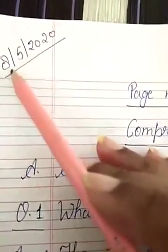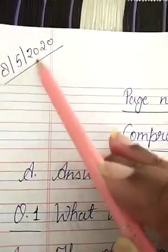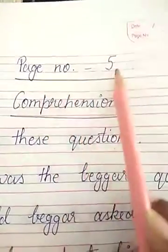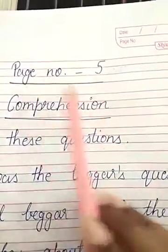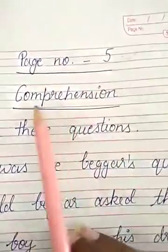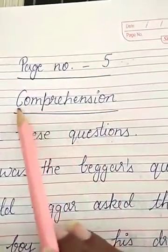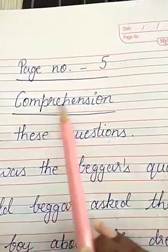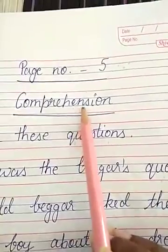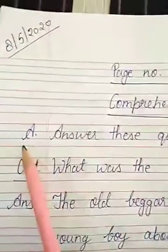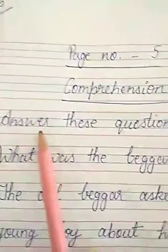Mention the date at the top: 8-5-2020. Page number 5, underline the heading. Write the second heading: Comprehension — C-O-M-P-R-E-H-E-N-S-I-O-N — and underline it. Part A: answer these questions.